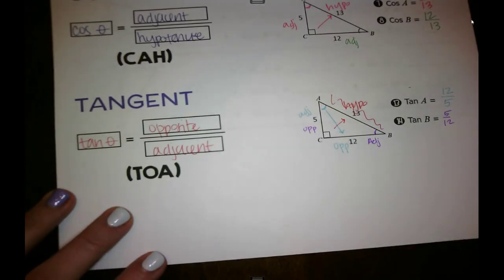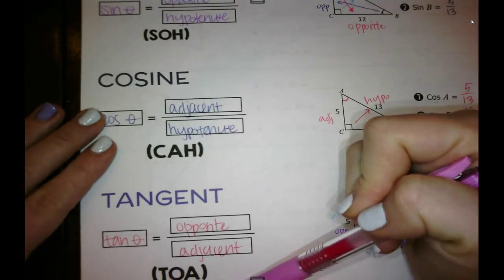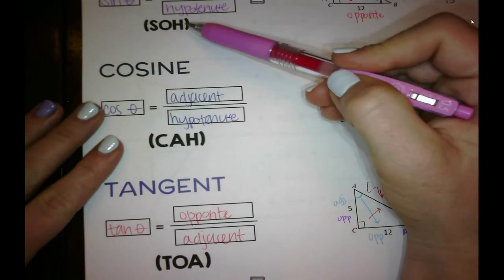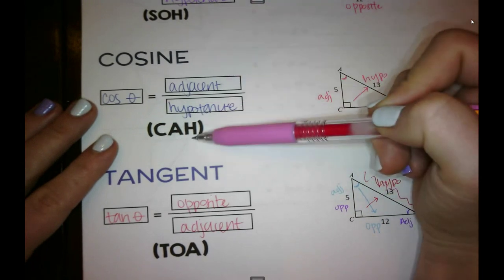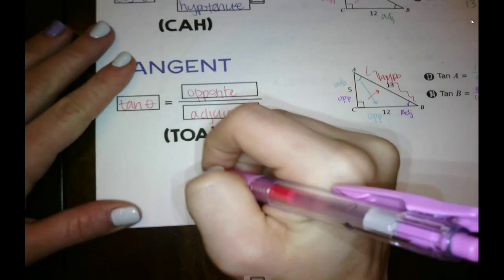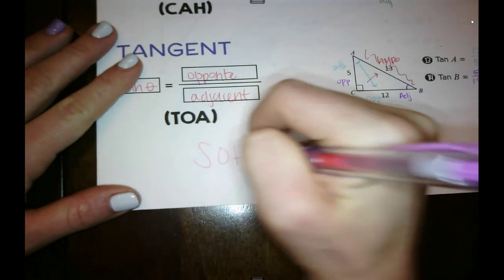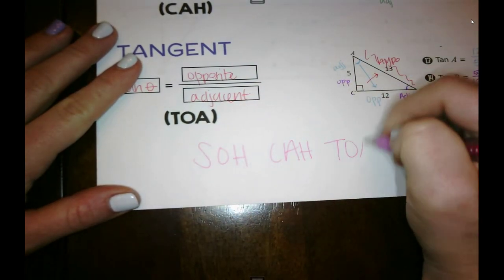All right, one way to remember what goes where is what was written underneath here. So we can say this weird word that's made up. Soh cah toa. Soh cah toa. So you can remember soh cah toa.